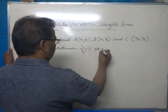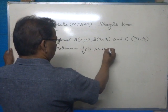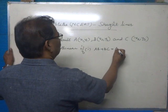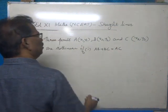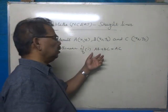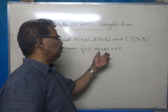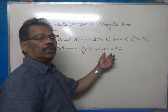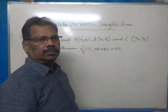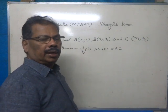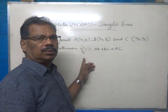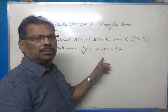The three points A, B, C are collinear if AB plus BC equals AC — that is, the distance between A and B plus the distance between B and C equals AC. Then the points A, B, C will be collinear.